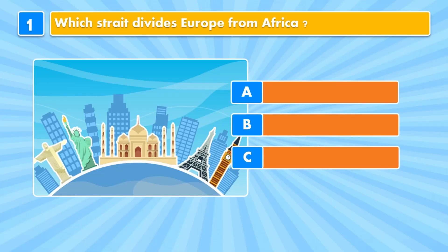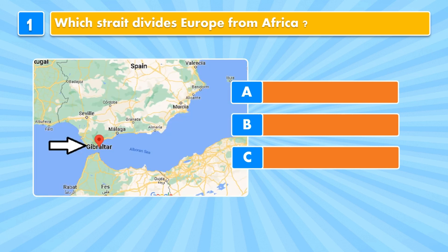Question one: which strait divides Europe from Africa? Dover, Gibraltar, Bosporus.